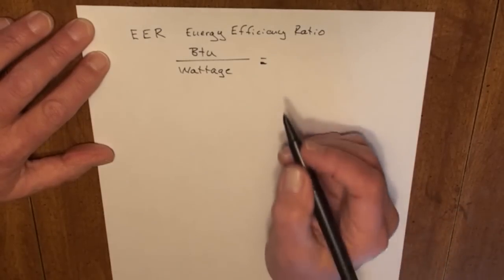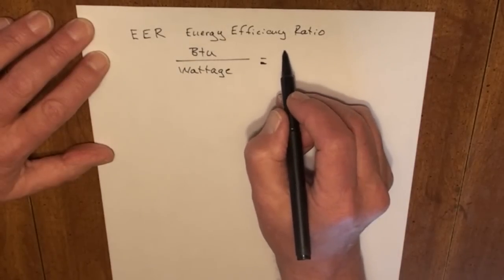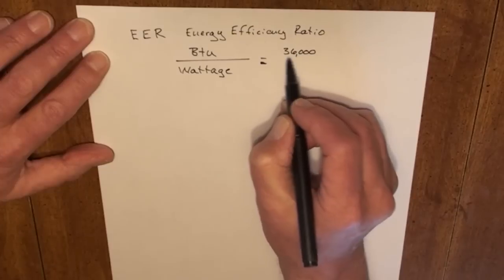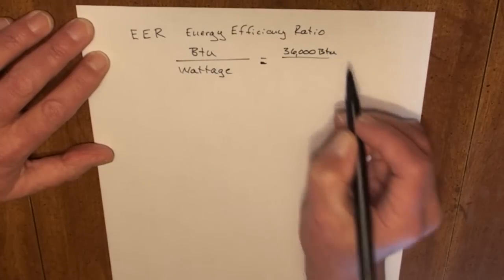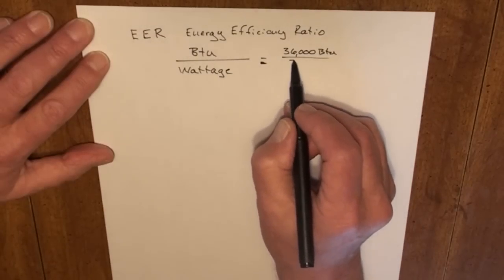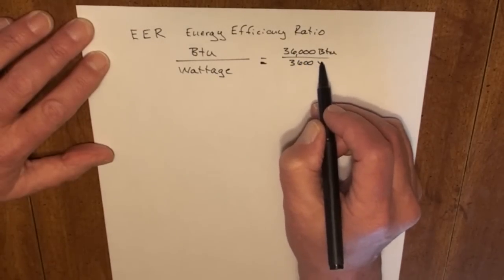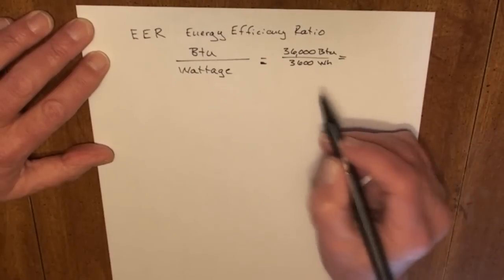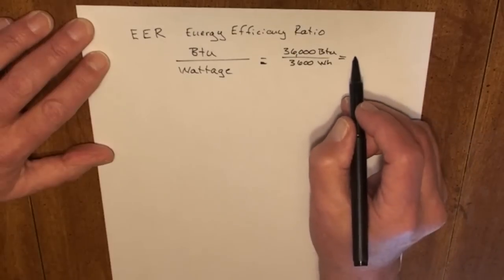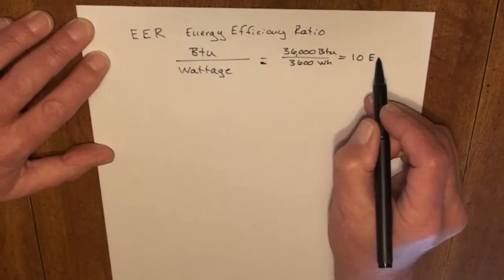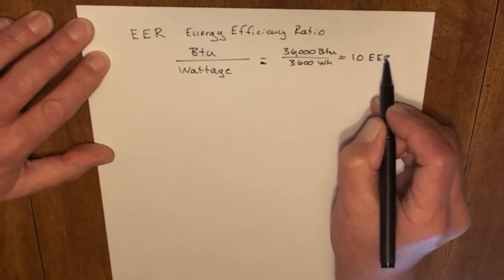For example, if I had a 36,000 BTU air conditioner, a 3-ton air conditioner, and it used 3,600 watts per hour, 3,600 divided into 36,000 would equal a 10 EER unit.